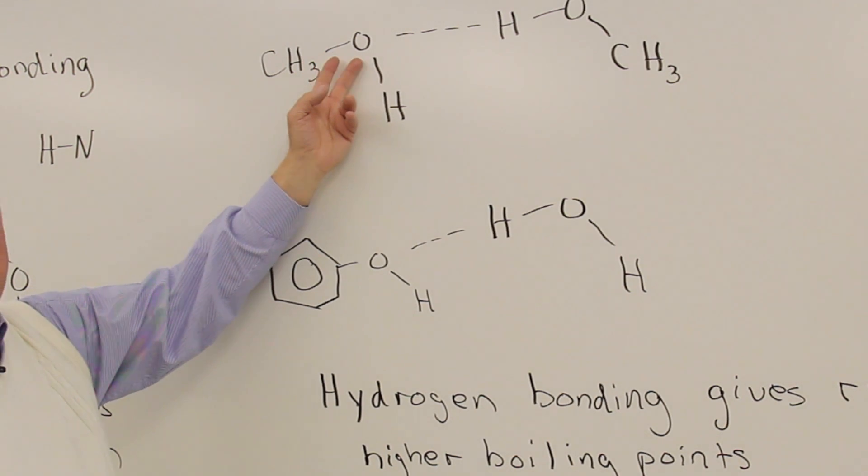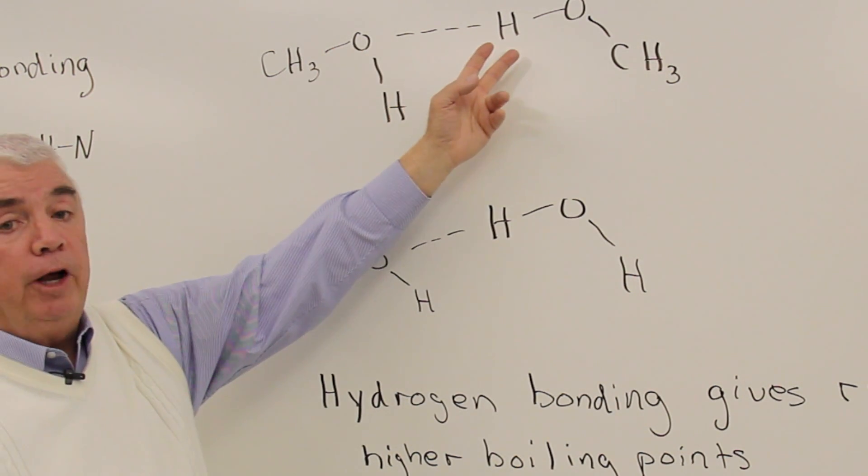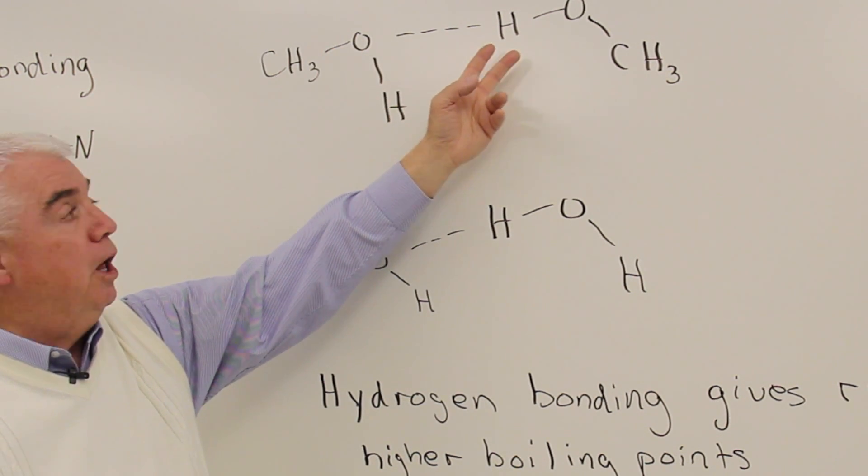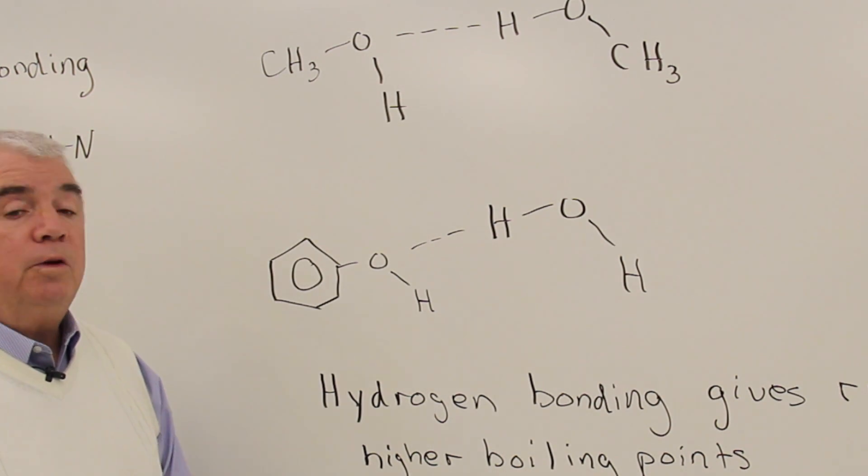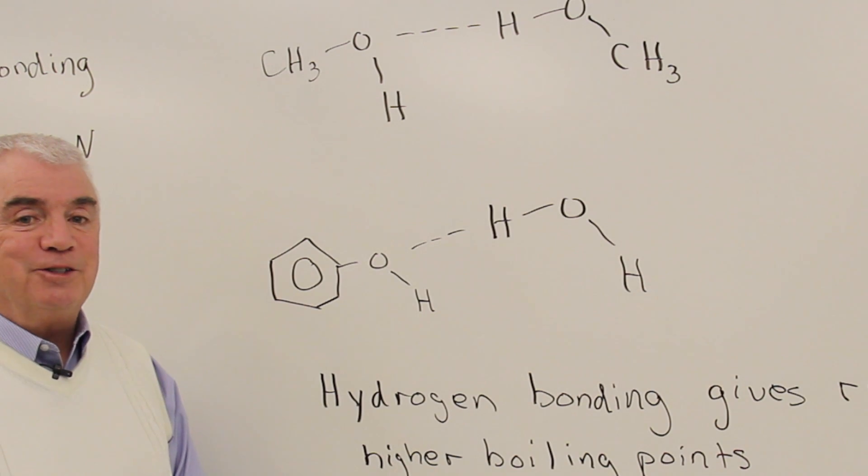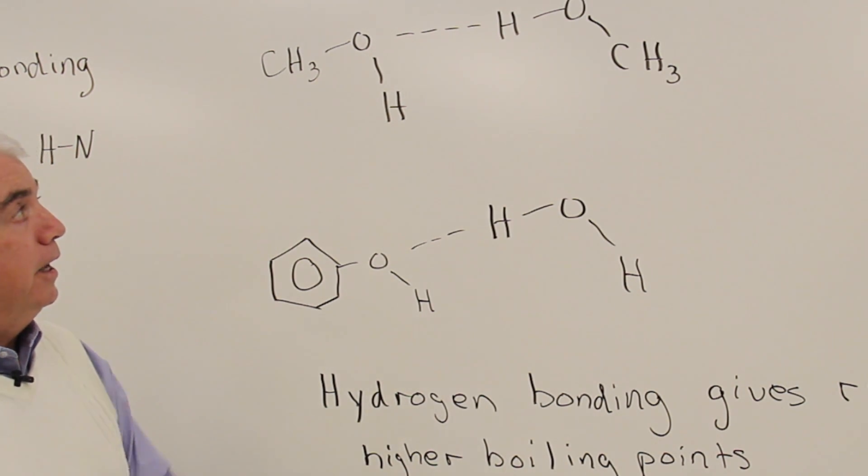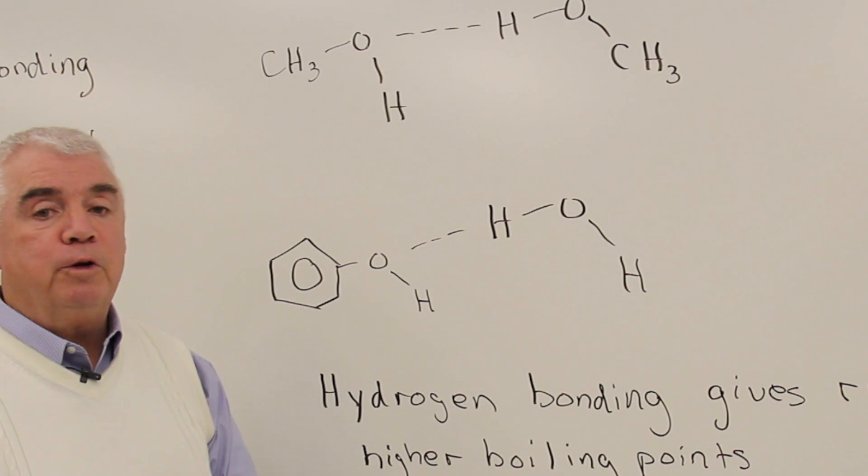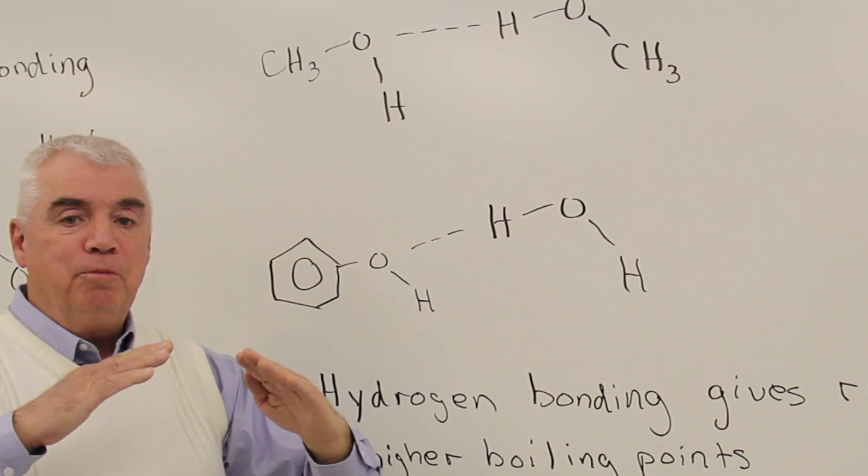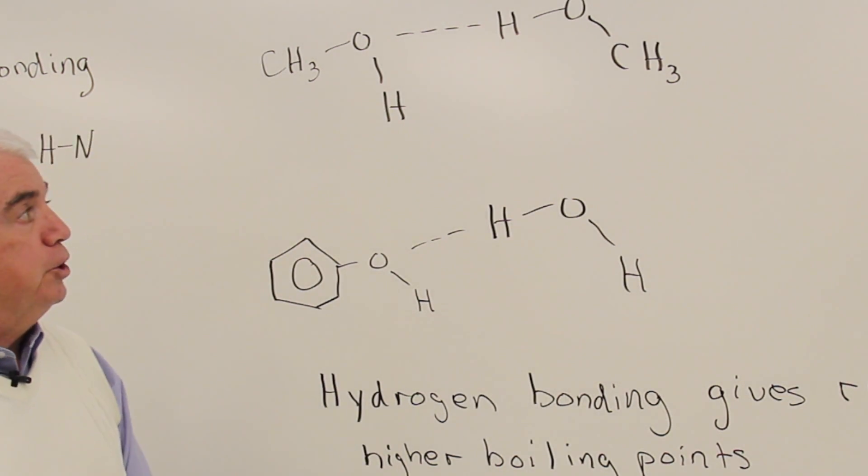The oxygen would be delta minus. A neighboring hydrogen would be delta plus. There'll be an attractive force between the two. That dotted line represents the hydrogen bond. And look to see what we've got. Two oxygens with a hydrogen in the middle. A hydrogen bond is sort of a hydrogen bridge between two molecules.